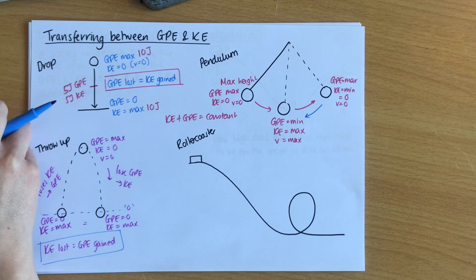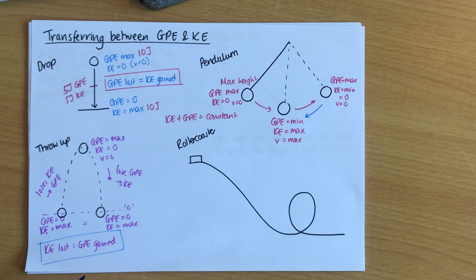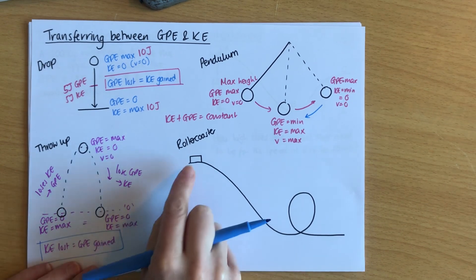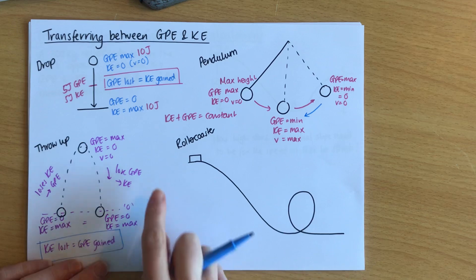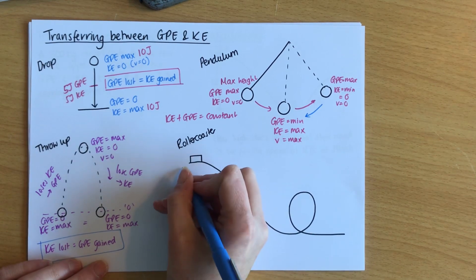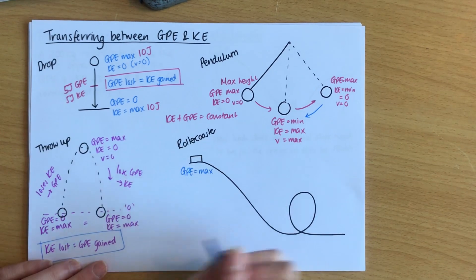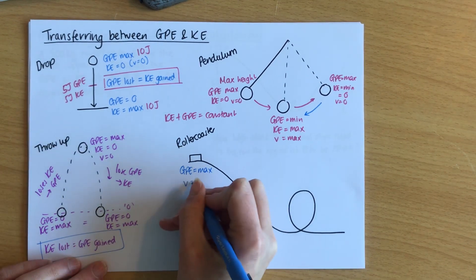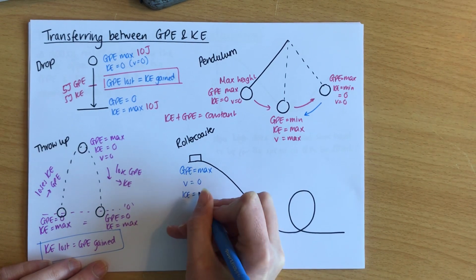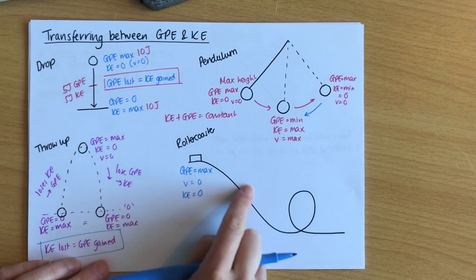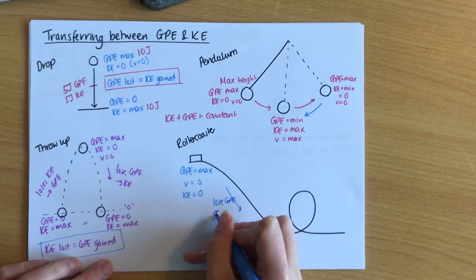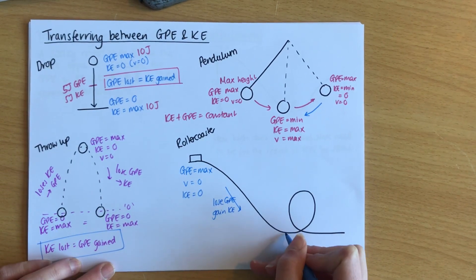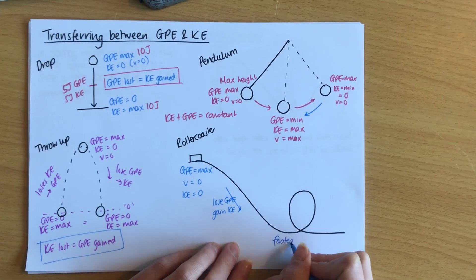A slightly more interesting example is a roller coaster. Roller coasters work on GPE and KE and the interplay between them. When you're on a roller coaster, you often get cranked up to the top of a big slope. Here I've drawn a loop-the-loop. At the maximum height, we have the maximum GPE, and usually at the top of the slope you're held there with no speed, which means you've got no kinetic energy. Then, as you go down the slope, you lose GPE and you gain KE.